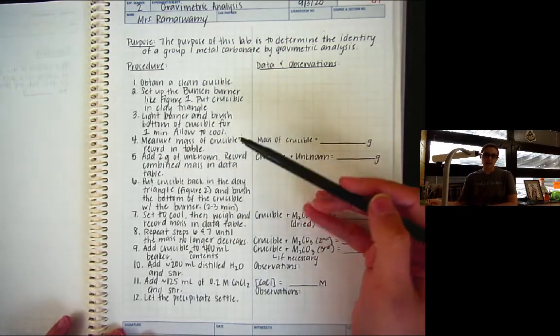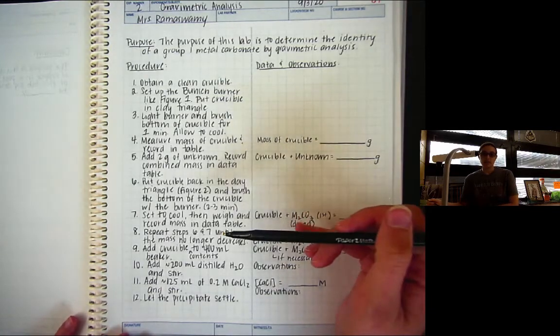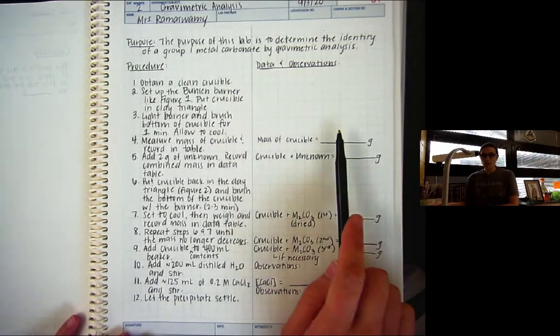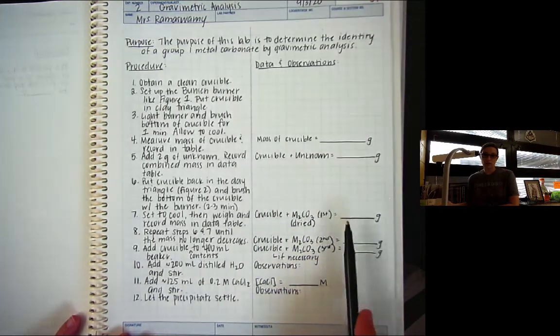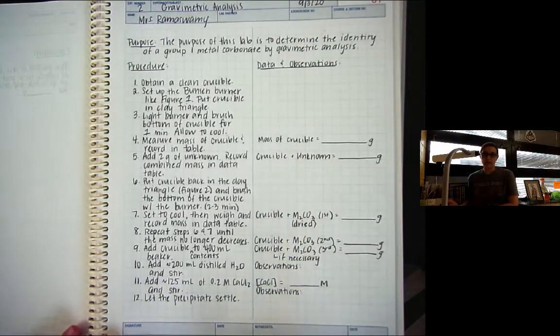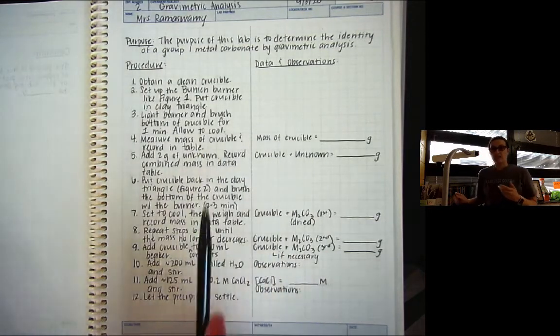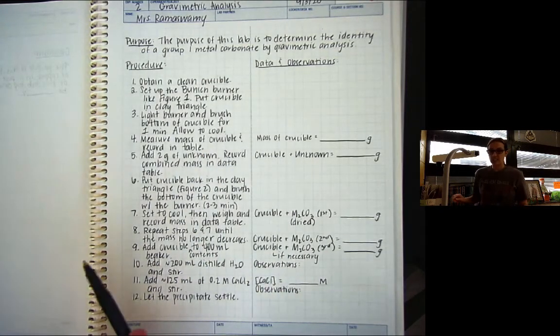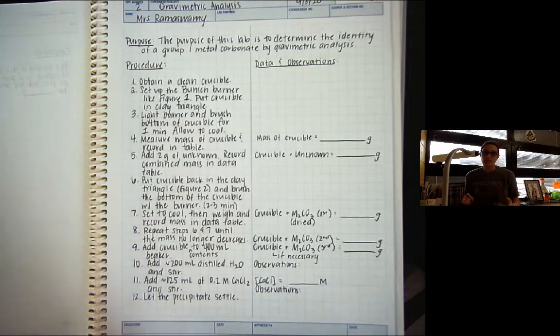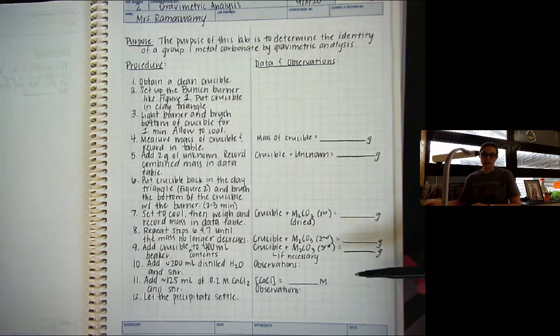So I put steps of the procedure on the left-hand side. And then what I did is anywhere that it said to measure a mass or anytime we were doing a reaction, I wrote those blanks over here on this side. Now, you don't have to write them over here on this side, but the reason I did this is so that I remember to take these observations or collect these pieces of data. It does say to record in a data table, and I'll show you where that data table goes once we do the pre-lab questions.